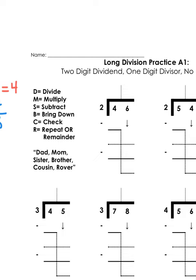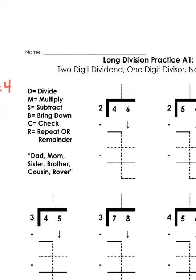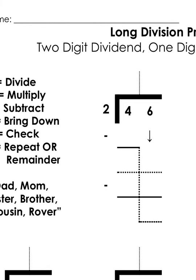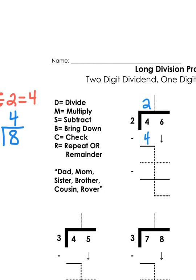So the first question I have to ask myself is, how many groups of two can I get out of four? I want to divide four into two groups. Well, I know that I can get at least two groups out of four because two times two is four. And then I'm going to multiply and put that number down there. So what I did just now is I divided four into two groups because two times two is four. Now I have to subtract the difference from my multiplication fact from my first digit place value, the tens of my dividend. So four minus four, that's going to give me a difference of zero. So I've now subtracted.